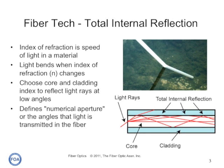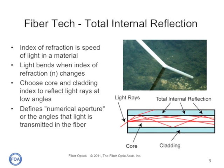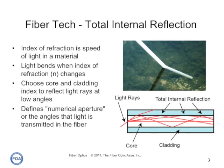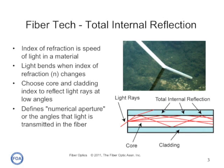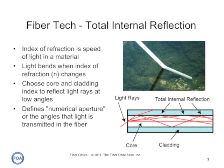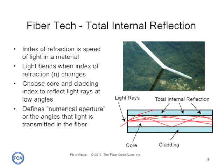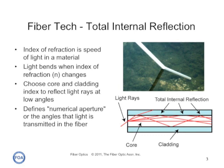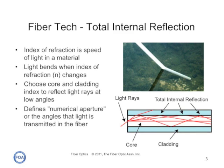The index of refraction is the speed of light in a material, and if we choose the core and cladding in optical fiber of the proper types of material, the light will be bent toward the core of the fiber at all angles. At a certain angle, the light will be bent enough to actually be trapped inside the core of the fiber, and this is what we call total internal reflection. You can see this on the diagram of a step index optical fiber shown below.